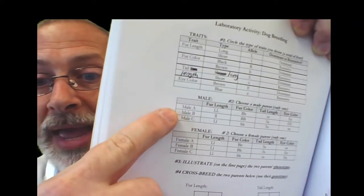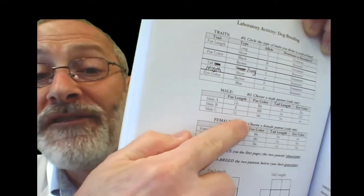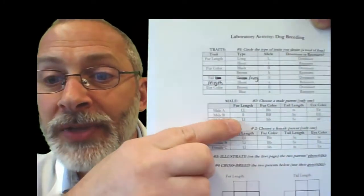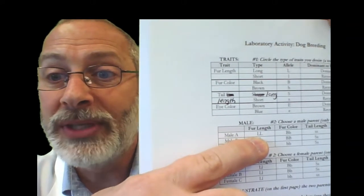Remember the phenotype is the physical appearance. So you need to look at the genotypes or the genetic makeup of your two parents from the following page. Did you choose male A, B, or C? And then look at what their phenotype would be based on the genotypes illustrated here. So for instance, if you chose male A and the fur length is capital L capital L, well what does that mean?